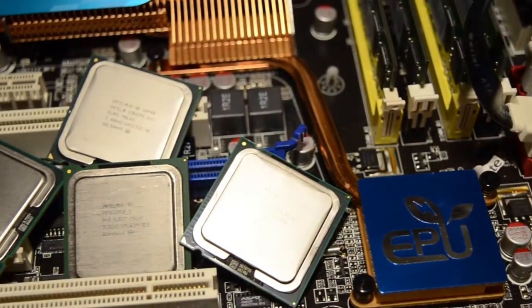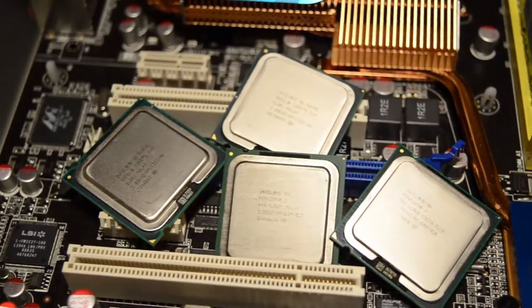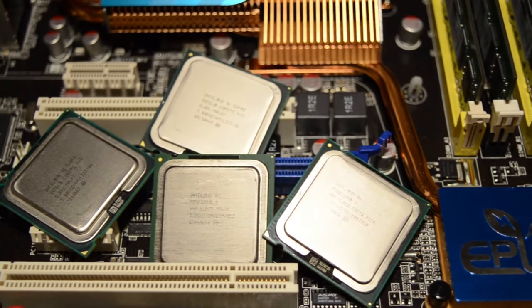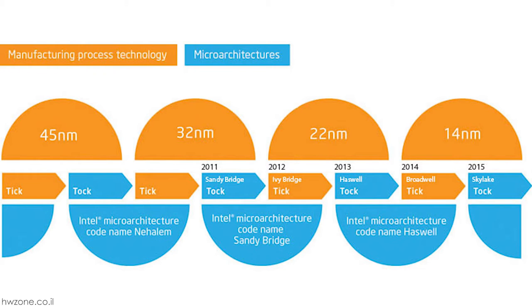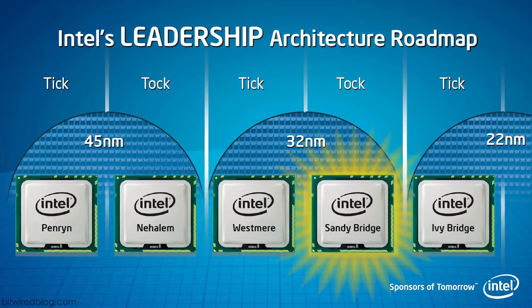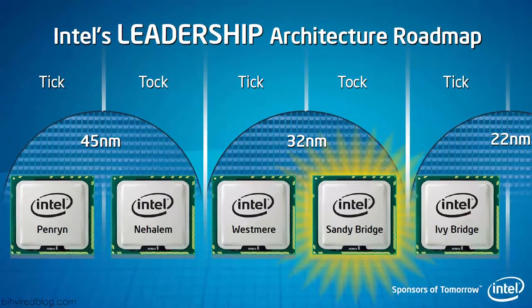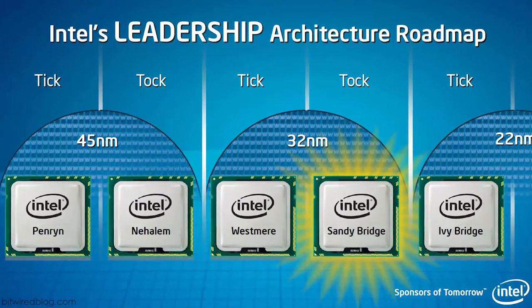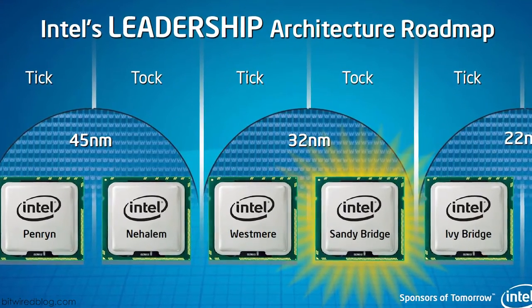It all started with the launch of the Core microarchitecture in the first quarter of 2006. Conroe was a tock in Intel's Tick-Tock model. Every tick was a new fabrication process, meaning a physical shrink of the transistors to allow for better power efficiency, and every tock was a new microarchitecture, usually resulting in increased performance.